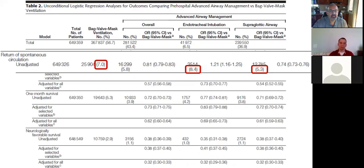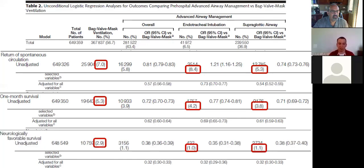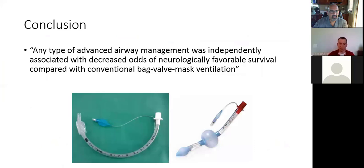So how'd they do? BVM group, ROSC 7%. ROSC for the endotracheal intubation, 8.4%. And ROSC for the supraglottic airway, 5.3%. So ROSC did a little bit better in the intubation group. If you look at one month survival, BVM 5.3%, intubated 4.2%, supraglottic airway 3.8%. So BVM's winning with intubation following behind. And favorable neurological outcome: BVM 2.9%, intubated 1%, supraglottic airway 1.1%. BVM wins again. Any type of advanced airway, the patient did worse.